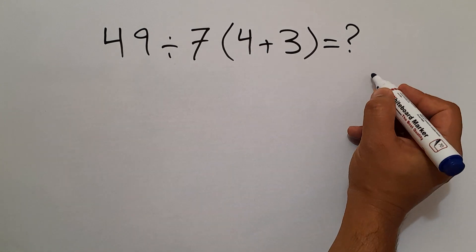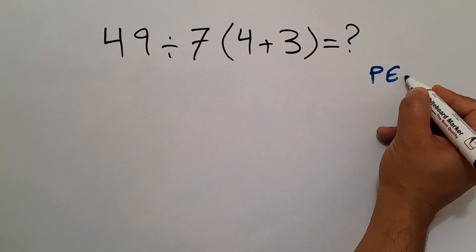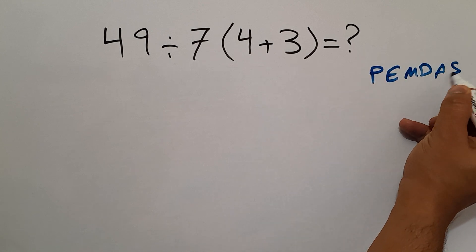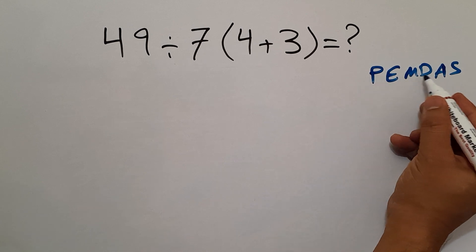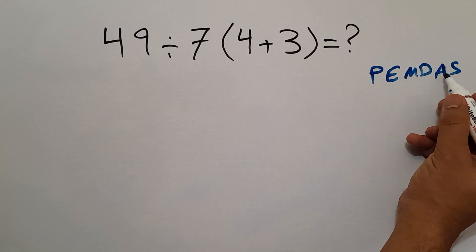According to the order of operations, which is PEMDAS, we first do parentheses, then exponents, then multiplication and division, and finally addition and subtraction.